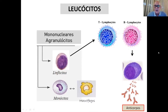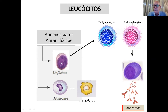Dentro desse grupo de leucócitos, as que mais nos interessam para entender a resposta imune com especificidade e memória são os linfócitos. No microscópio, aparecem como uma célula bem arredondada, com núcleo arredondado tomando quase todo o volume da célula. Com técnicas de laboratório, detectamos proteínas de superfície diferentes em subpopulações, classificando-as como linfócitos T e linfócitos B.